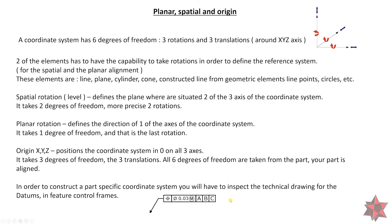To construct a part-specific coordinate system, you will have to inspect the technical drawing for datums in feature control frames like this one. These datums are the geometrical elements you will use to construct the alignment. We will talk about these in another video because they are more complex. That's all for now — I'm sorry it took so long to make another video, but I was on holiday. Stay safe and until next time, have a nice one.